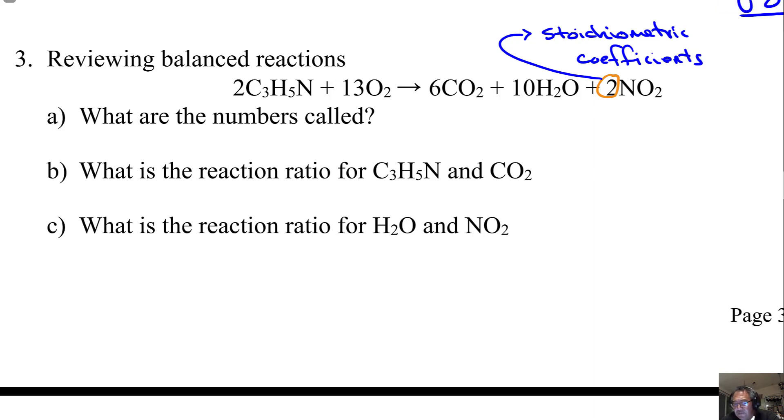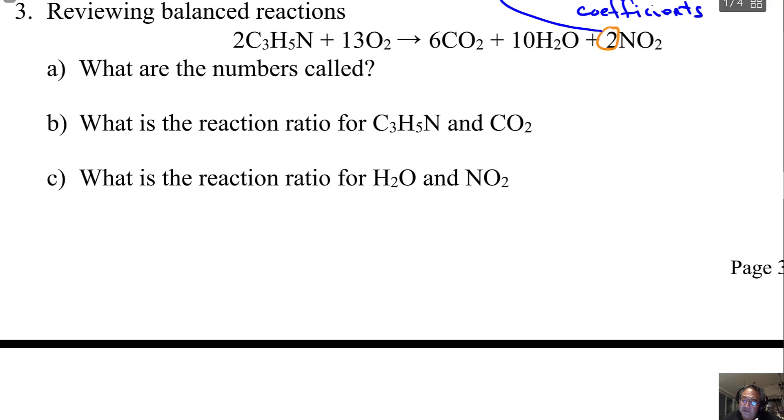So 2 is the stoichiometric coefficient for the C₃H₅N compound, 13 is for O₂, 6 is for CO₂, et cetera. That's what these numbers are called. You'll see that term all the time in the text of the book, so I just wanted to make sure we got that out.